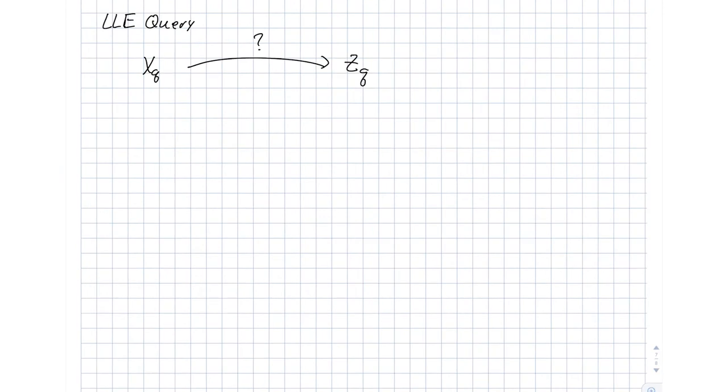So we're going to define NQ as the set of K nearest neighbors of Q, and this is from the training set.